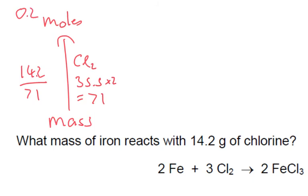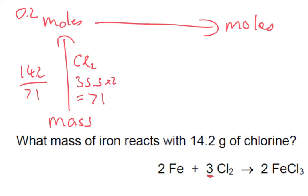Going to the other side — let's look at our ratio. We've got 3 chlorine going to 2 iron, so it's a 3 to 2 ratio. So 0.2 times 2 divided by 3, and we get 0.1̄3̄ recurring.